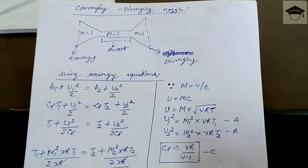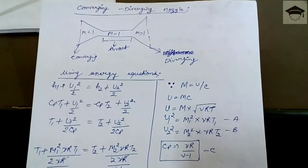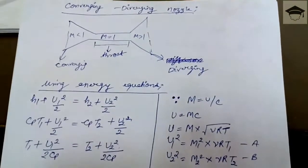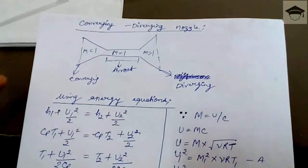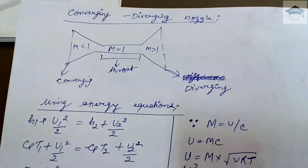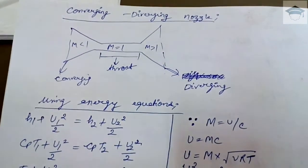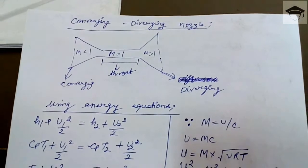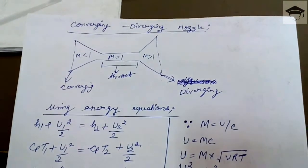This is the figure for the converging-diverging nozzle. Initially the Mach number is less than one, then in the throat portion it is equal to one, and afterwards it is greater than one. We have to derive the relation between the pressures and temperatures at the beginning and at the end.